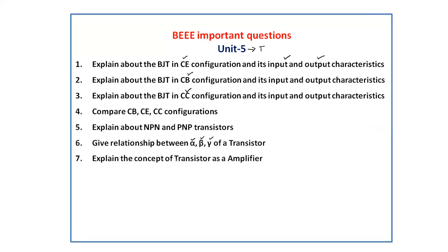Explain the concept of transistor as an amplifier — why the transistor acts as an amplifier, with equations and proof. Also explain the concept of the DC load line: its use, circuit diagram, and how the characteristics are obtained.